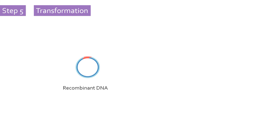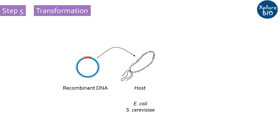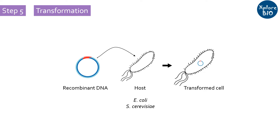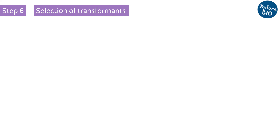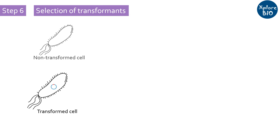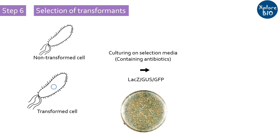Next, the recombinant DNA is incorporated into a suitable host such as bacteria like E. coli or yeast like Saccharomyces cerevisiae for transformation. The host provides energy and all the necessary machinery for DNA replication and protein synthesis. After transformation, you will get a mixture of transformed and non-transformed cells, and it is essential to prevent non-transformed cells from multiplying. To prevent this, we grow them on media containing suitable antibiotics on which only the transformed cells can grow, because only they carry the antibiotic resistance genes. Alternatively, if the vector has a scoreable marker such as GUS, GFP, or LegZ, you can visually or microscopically screen and select them.